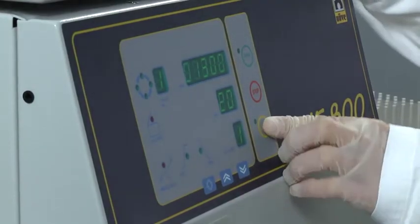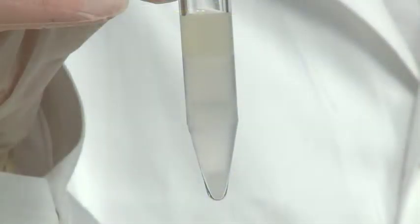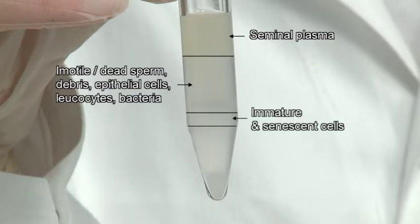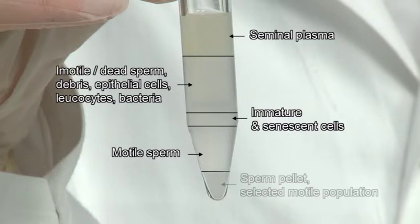After centrifugation, the ejaculate is separated into seminal plasma, immotile dead sperm, debris, epithelial cells, leukocytes, bacteria, immature and senescent cells, motile sperm, sperm pellet, and selected motile population.